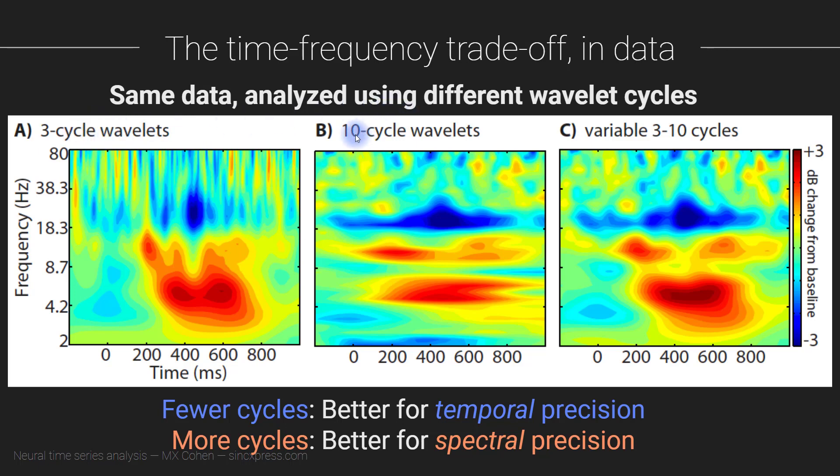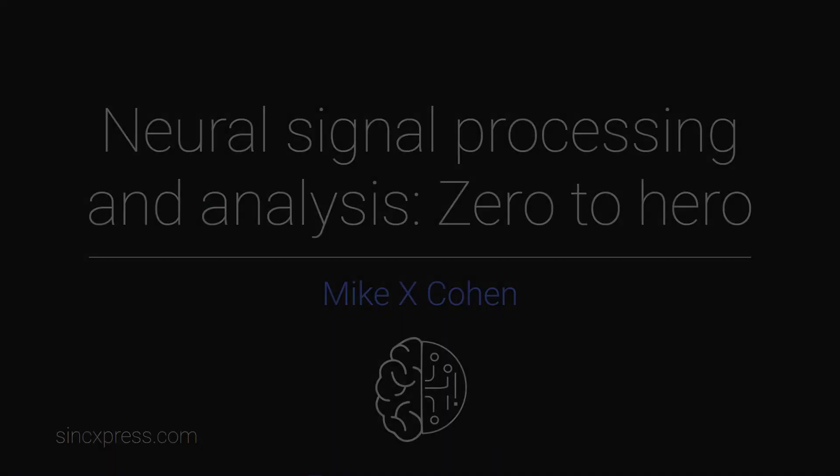The point of this video was to introduce and discuss this key wavelet parameter. This parameter also has implications for the assumption of stationarity in wavelet convolution, which will be discussed in the next video.